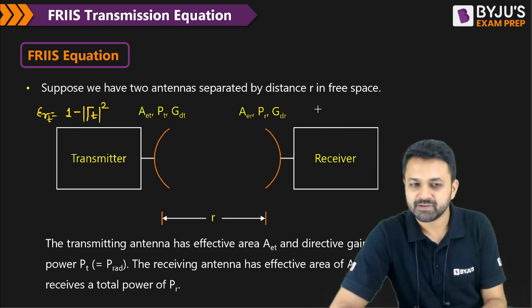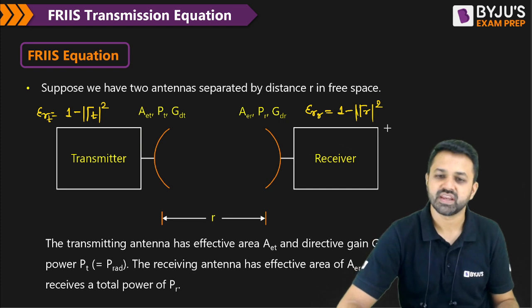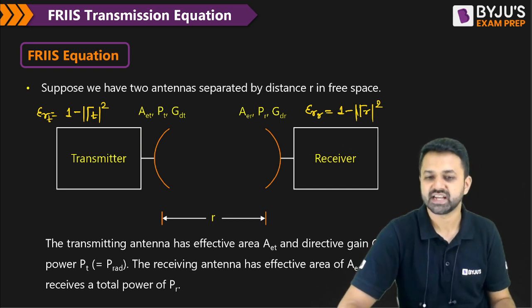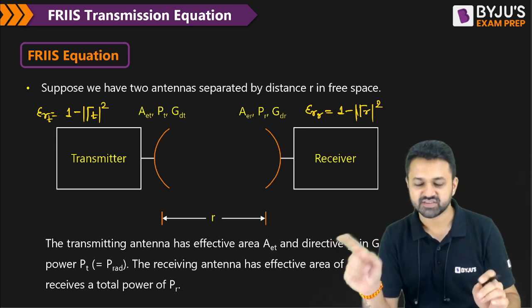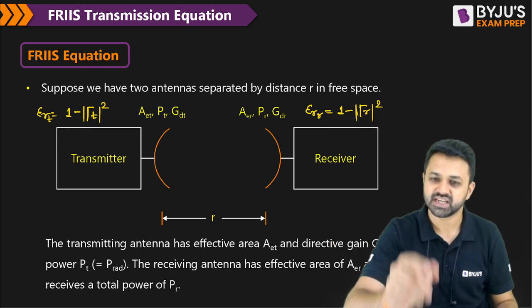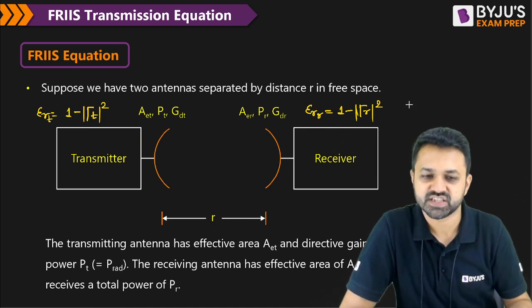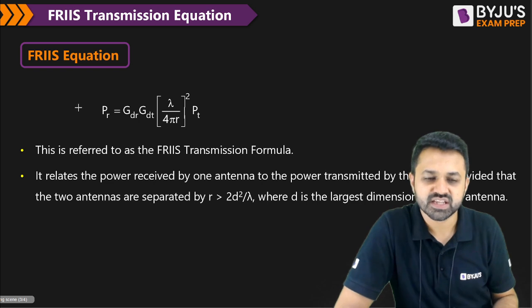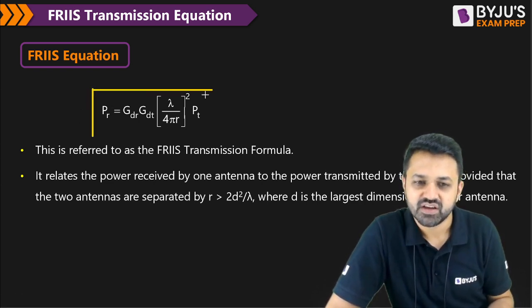This is another thing that you can have: the reflection efficiency at the receiving side. That means the receiving antenna impedance is not matching with the transmission line impedance. Then you will get this particular reflection, and whenever you get the reflection, you can calculate the reflection efficiency.